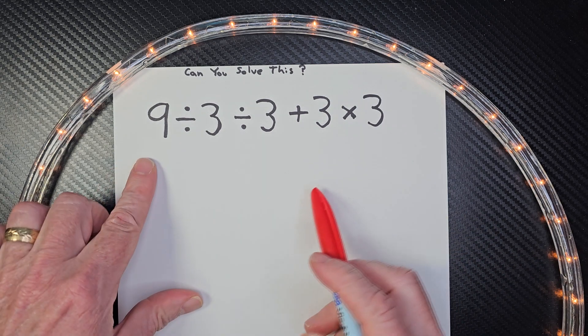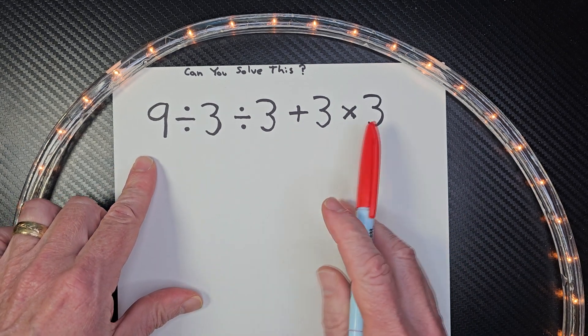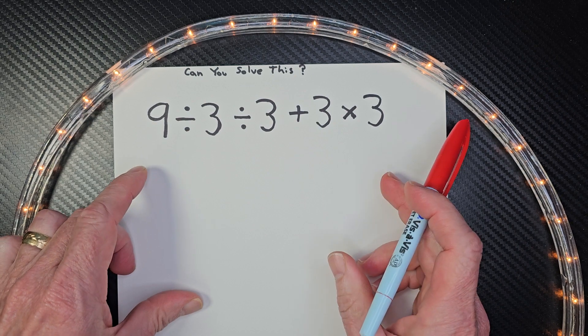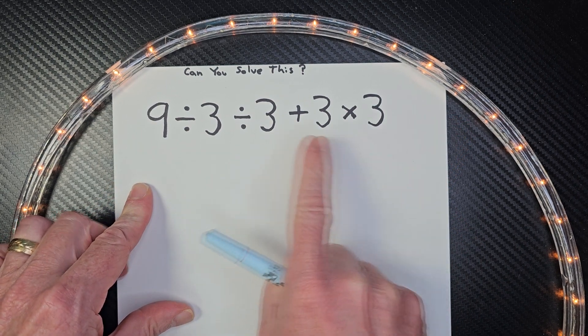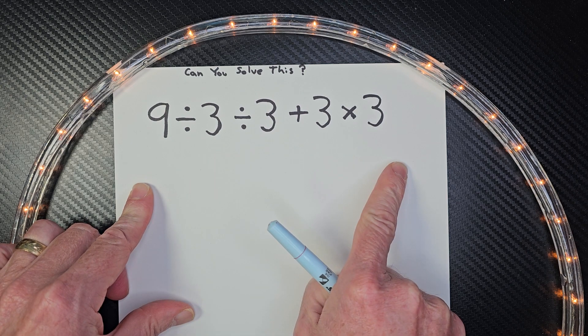All right, let's go ahead and begin. Remember, when we're doing order of operation, we do what's inside parentheses first, then exponents, and then multiplication and division from left to right, and then finally addition and subtraction from left to right.